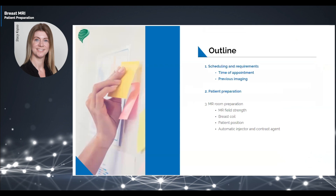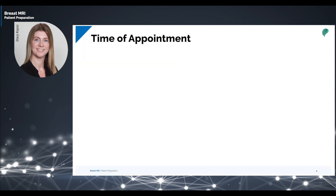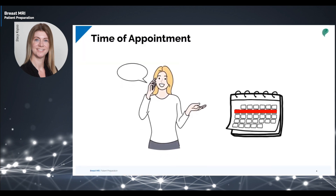To carry out a breast MRI procedure, we first need to understand appointment timing and other requirements. For pre-menopausal patients, a breast MRI appointment is best scheduled during the second week of the menstrual cycle, between approximately the 7th and 13th day of the patient's cycle. This is to reduce background parenchymal enhancement.